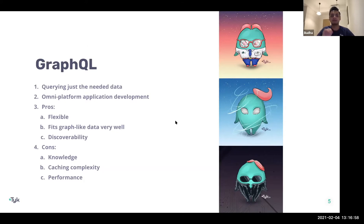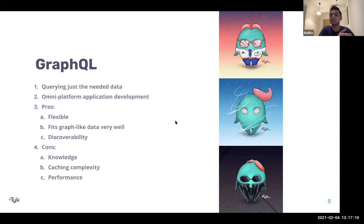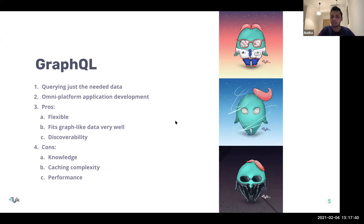GraphQL fits graph-like data well — where it really thrives is combining lots of different data sources with cascading relationships. If you're familiar with graph data structures, this is a really good way of managing that. For flat data structures, you may not need GraphQL. When considering adoption, you need to think about complexity and use case.